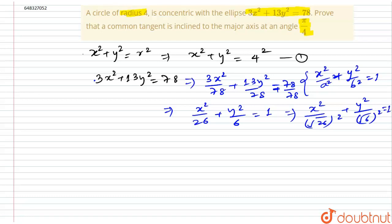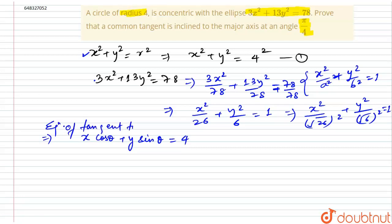For the circle, we can write the equation of the tangent in the form x cosθ + y sinθ = r, where r = 4. This is the equation of the tangent to the circle.